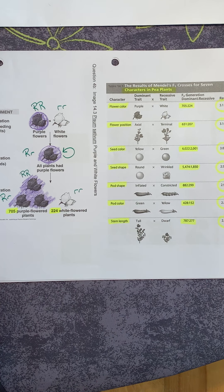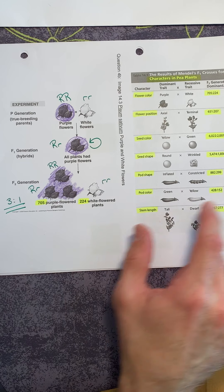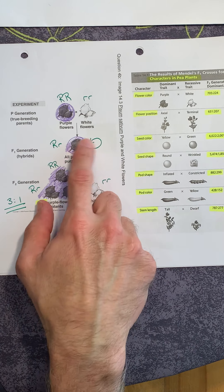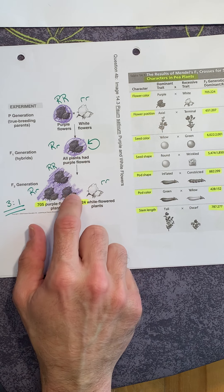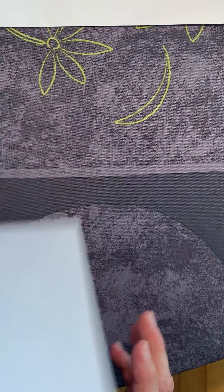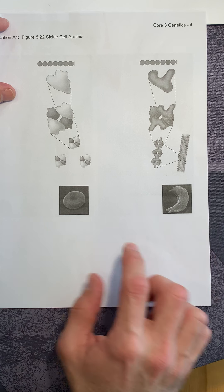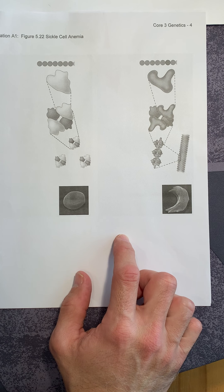So these are the Mendel handouts that we were talking about, his data set, and his classic cross where he then inbred the heterozygote and then was able to explain it. There's a page after the Mendel images that addresses sickle cell anemia, and I'd love to ask this question on the exam.